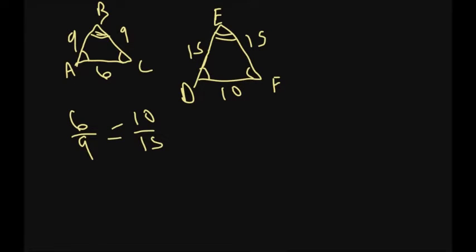I could test this by reducing—that's another way to do this. So 6 over 9, you can divide those both by 3, which would give me 2 thirds. 10 over 15, I can divide both those by 5, so 10 divided by 5 is 2, 15 divided by 5 is 3. So I get 2 thirds.